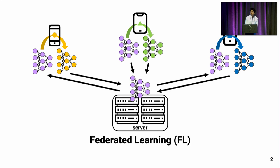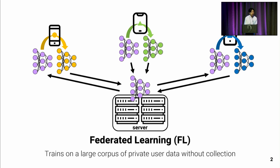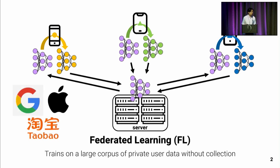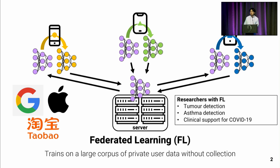Federated learning is a new machine learning paradigm that performs decentralized training on mobile devices with local data, and it trains on a large corpus of private user data without collecting them. It enables many new applications and is gaining lots of interest from both academia and industry. Big tech companies like Google, Apple, and Taobao are actually deploying federated learning in their products, and many researchers are proposing amazing new applications such as tumor detection, asthma detection, and even clinical support for COVID-19.